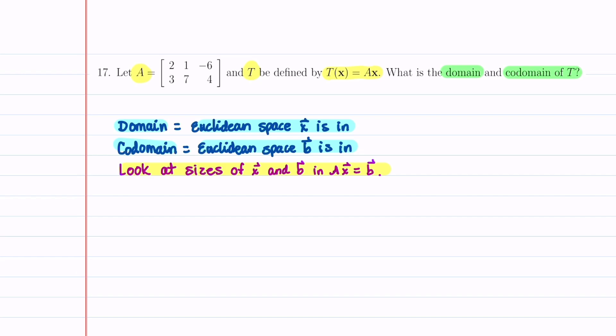I'm going to begin by writing down A times X is equal to B. We're not going to plug in matrix A. What we're going to do is just look at the size of matrix A. Matrix A has two rows and three columns, so it's written as two by three.